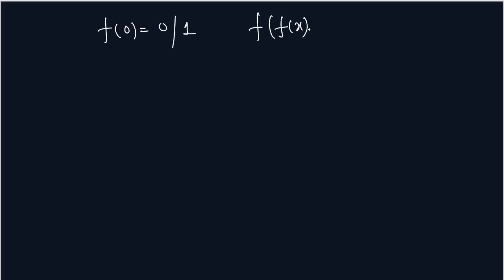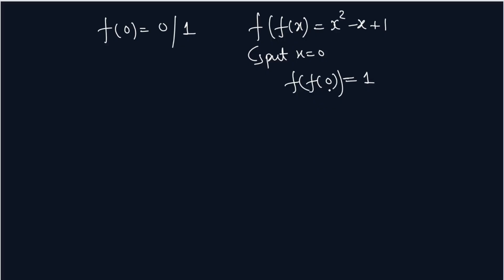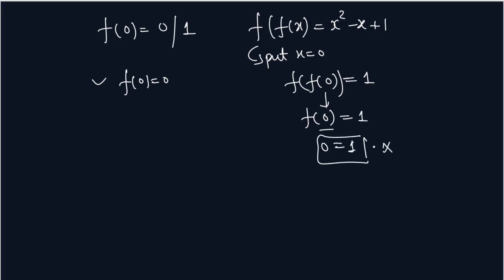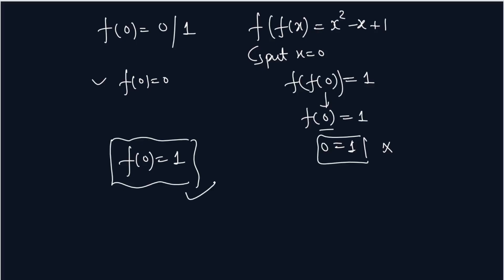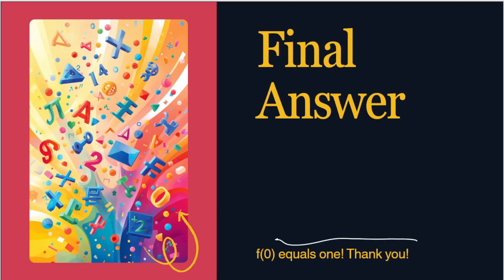To identify which one, take the composite function x² - x + 1 and put x = 0: F(F(0)) = 1. If F(0) = 0, then F(0) = 0 must equal 1 — that's not possible. So the conclusion is F(0) = 1. That is your right answer.